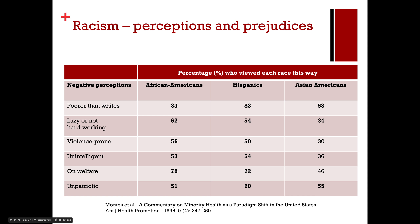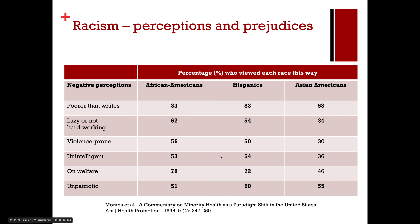The same negative perceptions applied similarly to Hispanics, and not quite as much for Asian Americans. 62% and 54% respectively of African Americans and Hispanics were viewed as being lazy or not hardworking. More than half were viewed as violence-prone. They were more likely to be viewed as unintelligent, on welfare, and unpatriotic — and that last one goes straight across the board for African Americans, Hispanics, and Asian Americans.